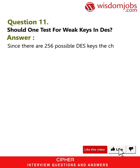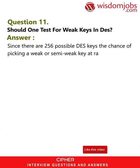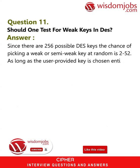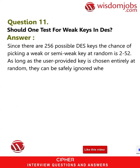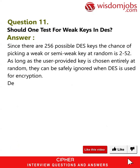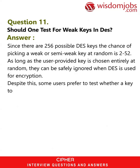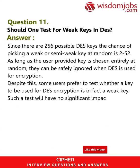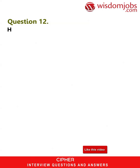Question 11: Should one test for weak keys in DES? Answer: Since there are 2^56 possible DES keys, the chance of picking a weak or semi-weak key at random is 2^(-52). As long as the user-provided key is chosen entirely at random, weak keys can be safely ignored when DES is used for encryption. Despite this, some users prefer to test whether a key to be used for DES encryption is in fact a weak key. Such a test will have no significant impact on the time required for encryption.